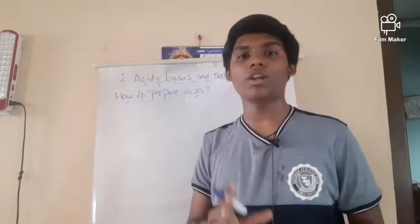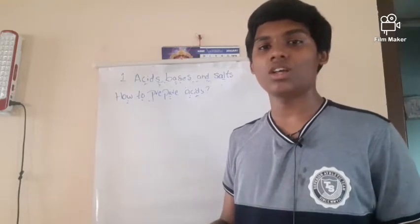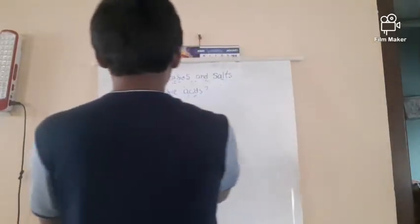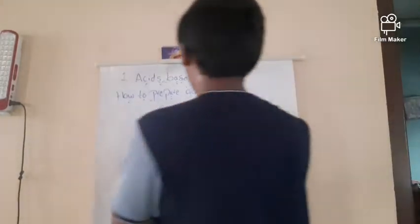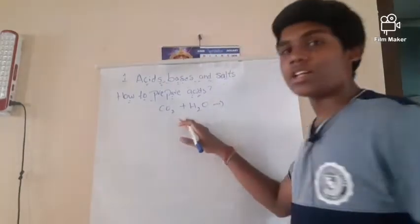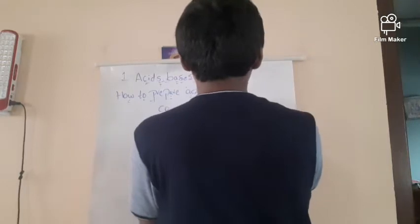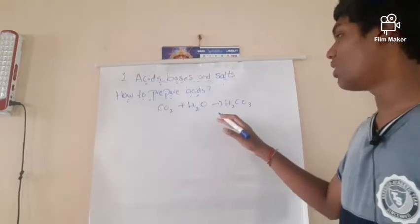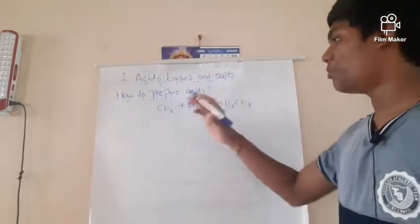First of all, how to prepare acids. Acids can be prepared by non-metal oxides like carbon dioxide, oxygen, and so on. When these non-metal oxides are dissolved in water, they form acids. For example, when CO2 (carbon dioxide) is dissolved in water, it forms H2CO3, which is carbonic acid.